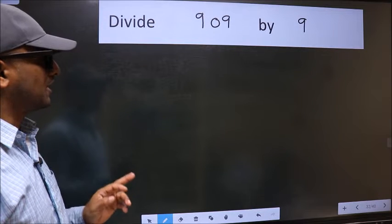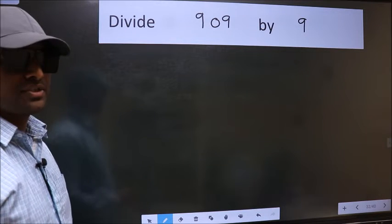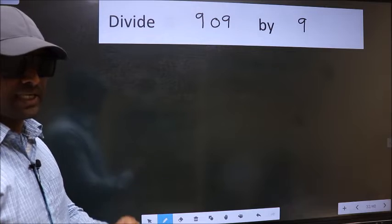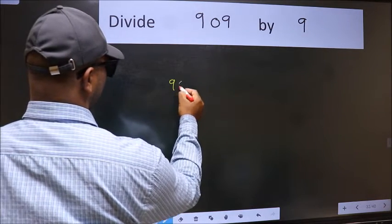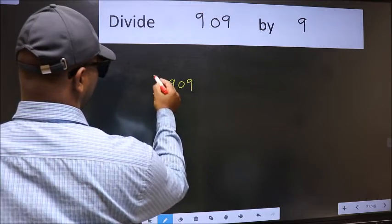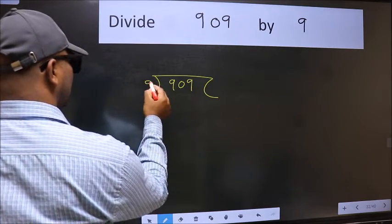Divide 909 by 9. To do this division, we should frame it in this way. 909 and 9 here.